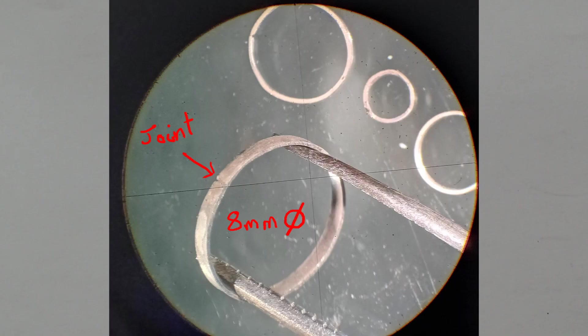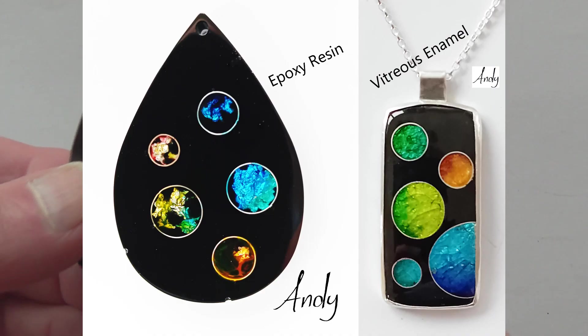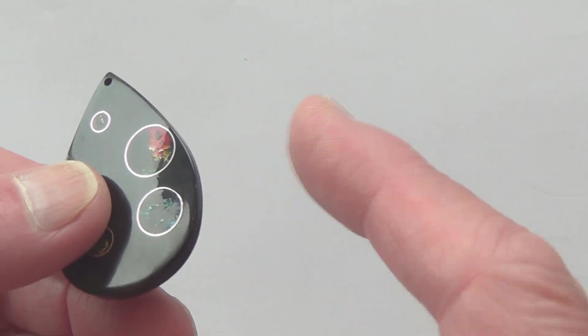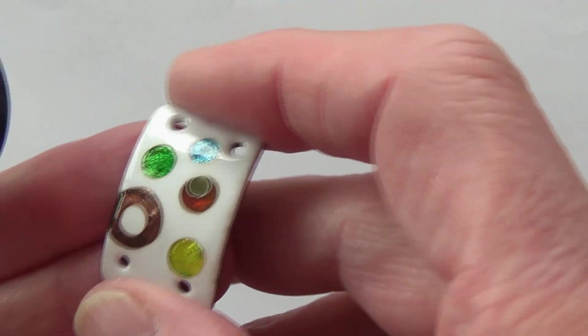Hi guys, my name is Andy and I'm going to show you how I make the little silver rings that I use in my resin and enamel work.